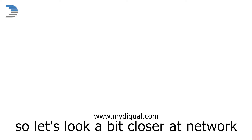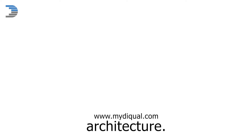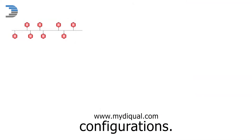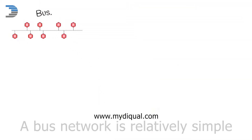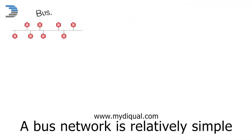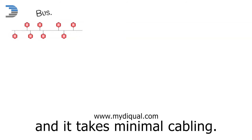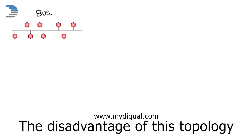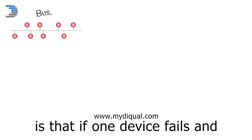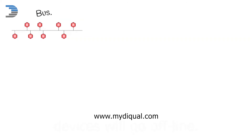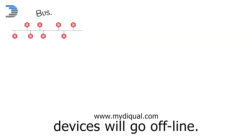So let's look a bit closer at network architecture. There are several different configurations. A bus network is relatively simple to configure and it takes minimal cabling. The disadvantage of this topology is that if one device fails and the bus gets broken, then all of the downstream devices will go offline.